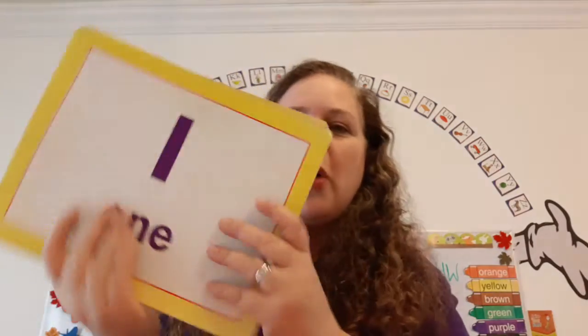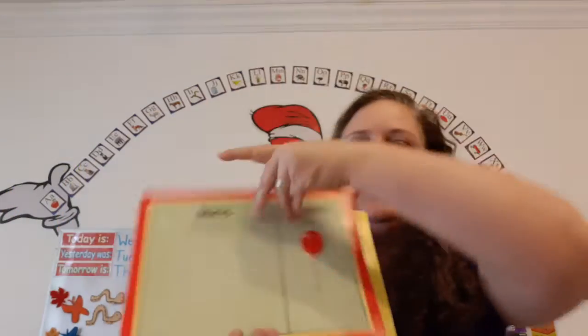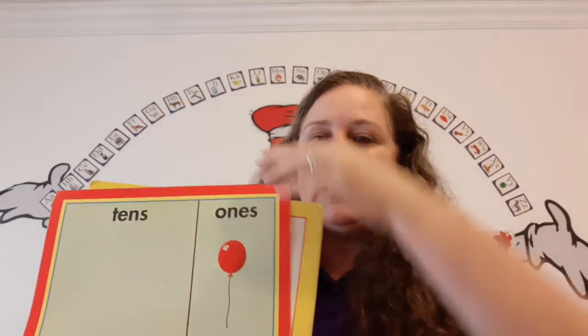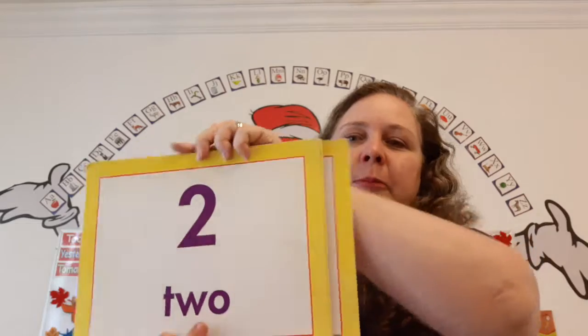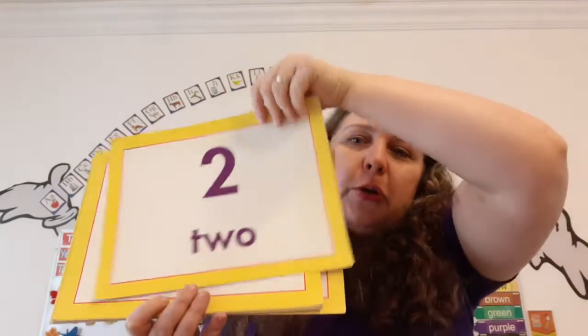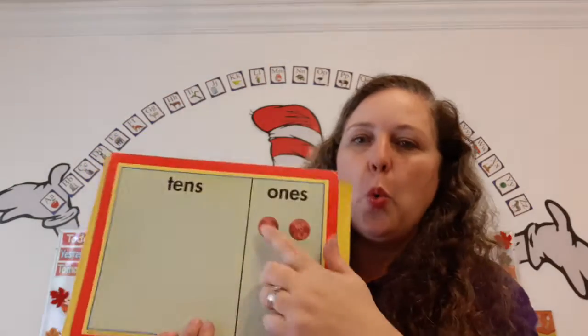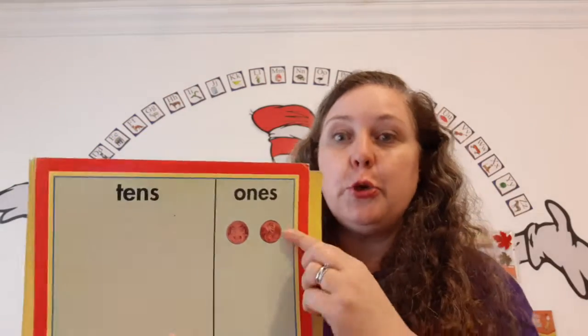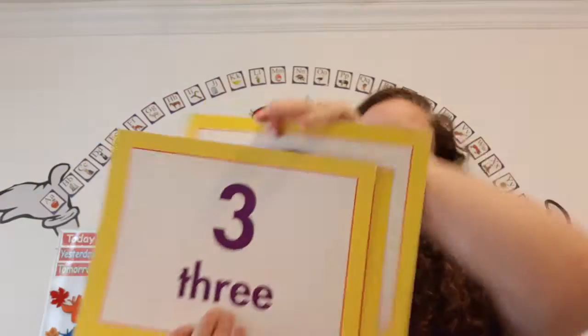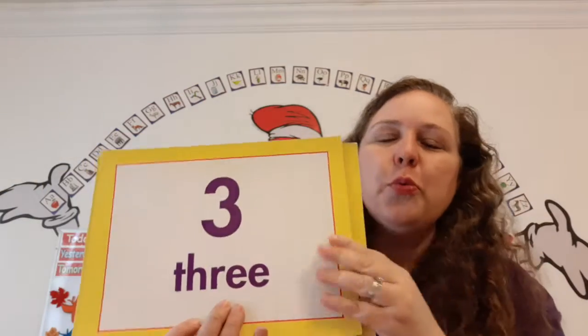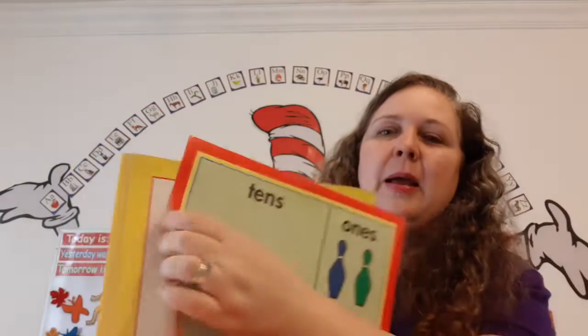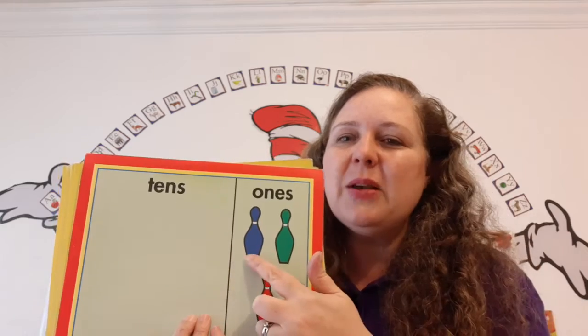Super duper. Okay, now stop, look, and listen. We're going to review our numbers. One — balloon. Two — one, two — pennies. Three — bowling pins. One, two, three.